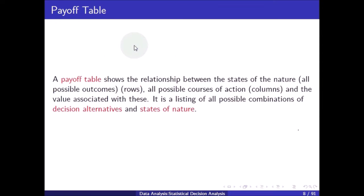A payoff table shows the relationship between the states of nature — all possible outcomes as rows — and all possible courses of action as columns, along with the values associated with these combinations. It is a listing of all possible combinations of decision alternatives and states of nature.